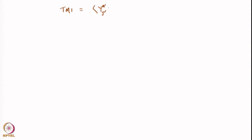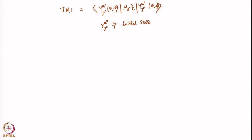Welcome to lecture number 28 of the course Quantum Mechanics and Molecular Spectroscopy. In the last class, we were looking at the transition moment integral for rotational transitions. The TMI was equal to Y_J'M' (θ,φ) μ₀ Y_J''M'' (θ,φ), where double prime belongs to the initial state and single prime represents the final state.